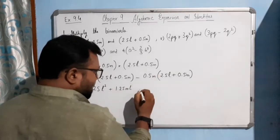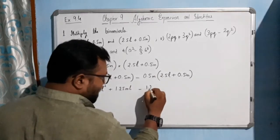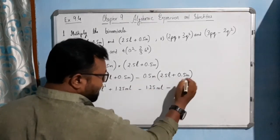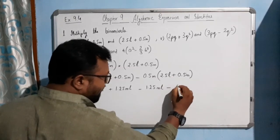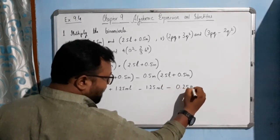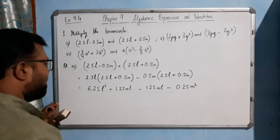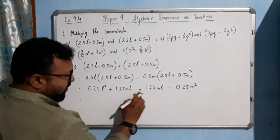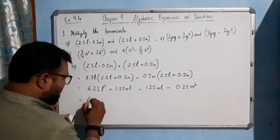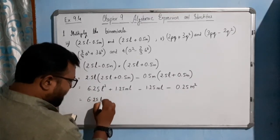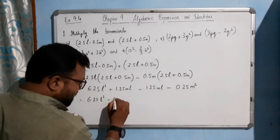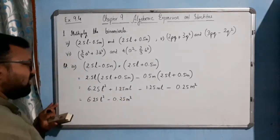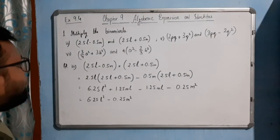Then minus 0.5M times 2.5L gives minus 1.25LM, and minus 0.5M times 0.5M gives minus 0.25M squared. The two middle terms cancel out, so the final answer is 6.25L squared minus 0.25M squared. This is the answer for our first expression.